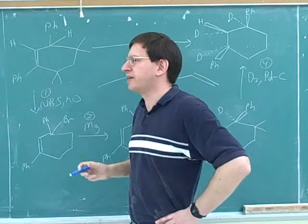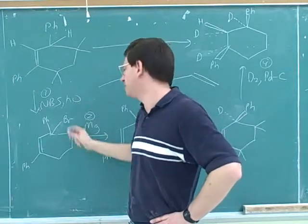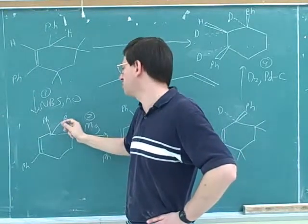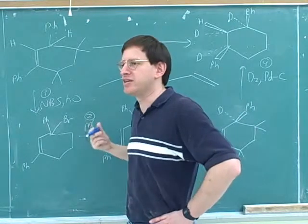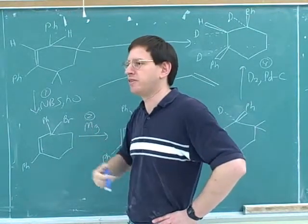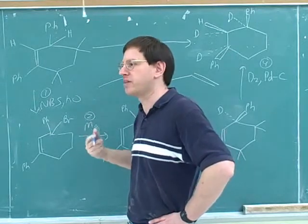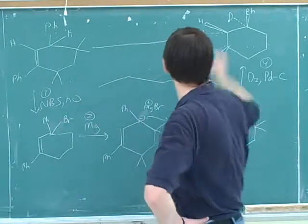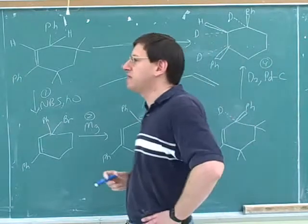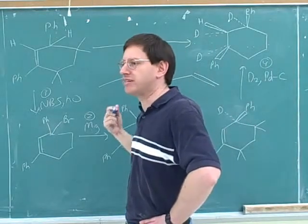Well, again, we should say this is a defunctionalization when you're removing a functional group. Normally, when we remove a functional group, we replace it with another functional group. For example, if we did an SN2, we would replace the bromine with a nucleophile. That wouldn't be a defunctionalization. That's just replacing one functional group with another. Most of the reactions you've learned replace one functional group with another. But here, we need to replace a functional group with a non-functional group, just with a hydrogen.